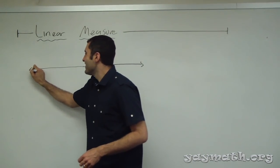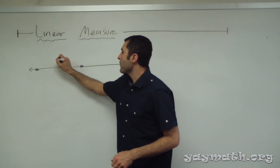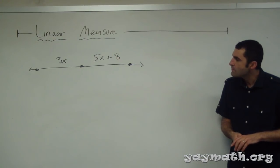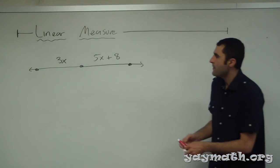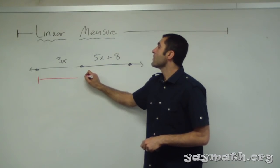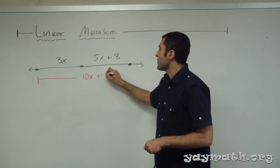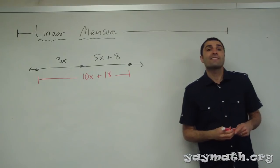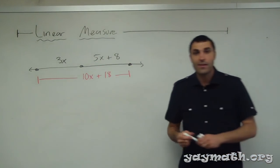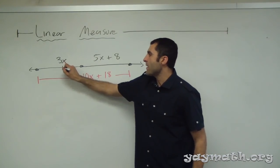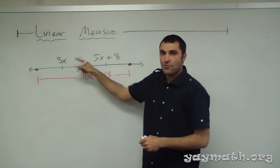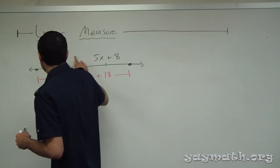Let's go with these segments: 3x, then 5x plus 8, and then 10x plus 18. It might result in a decimal — that's fine. Is that the midpoint? Not necessarily — good question. I did not designate this as the middle. If I marked this segment the same as that segment, we could imply this piece equals that piece, but I have not marked it as such.